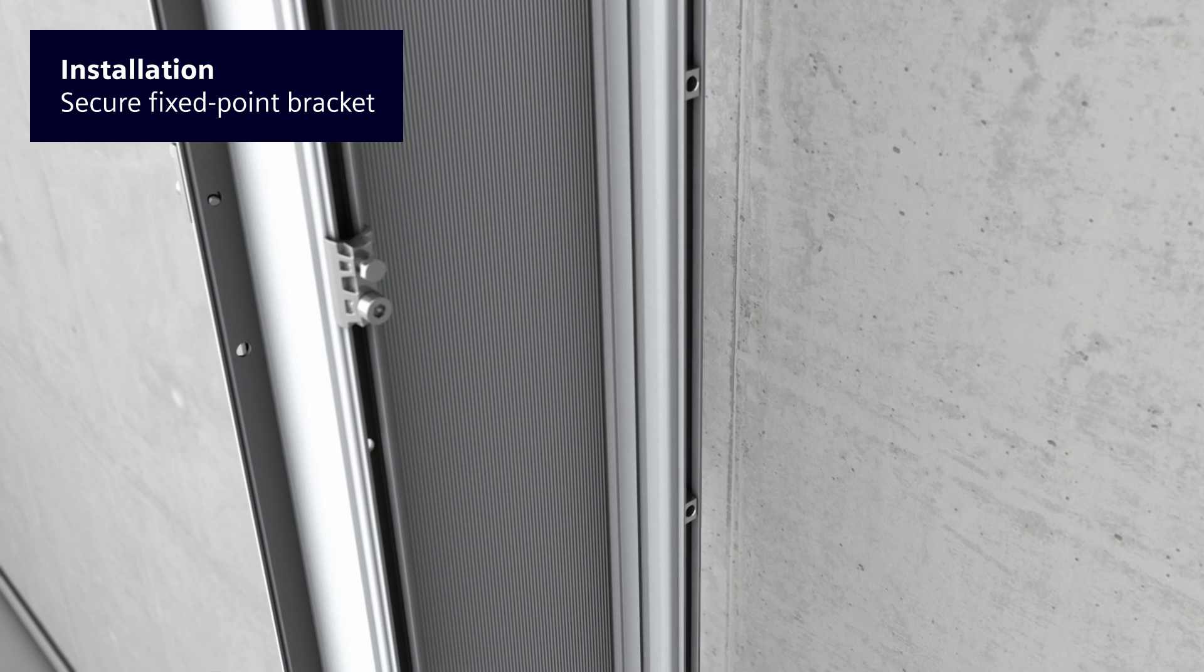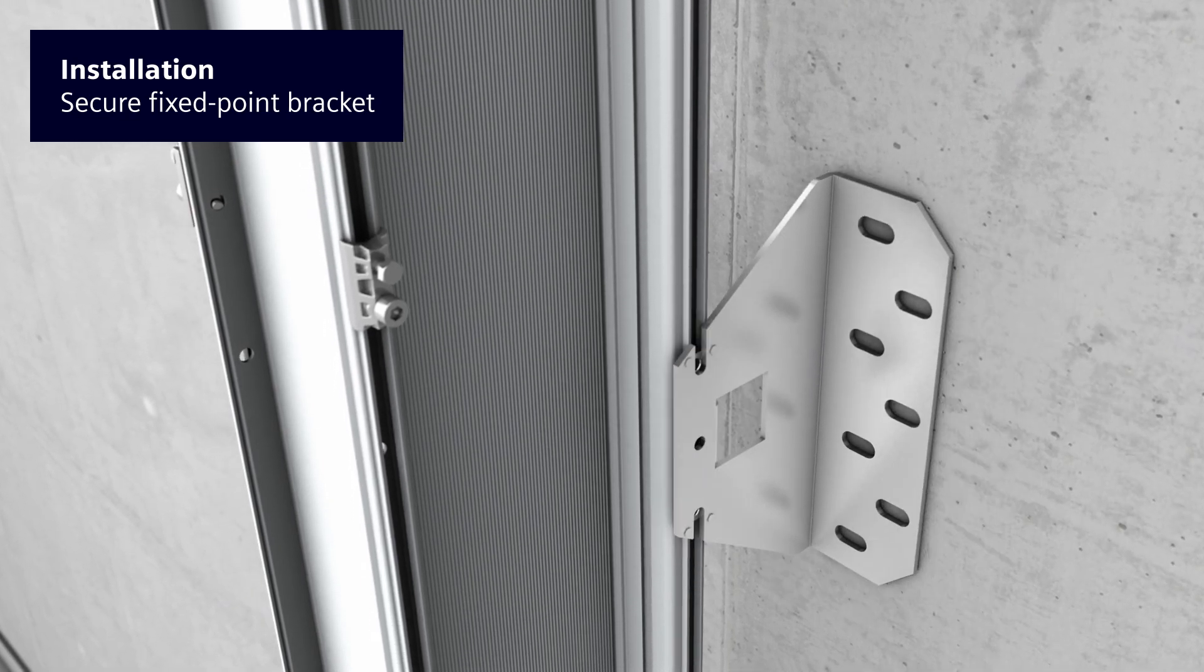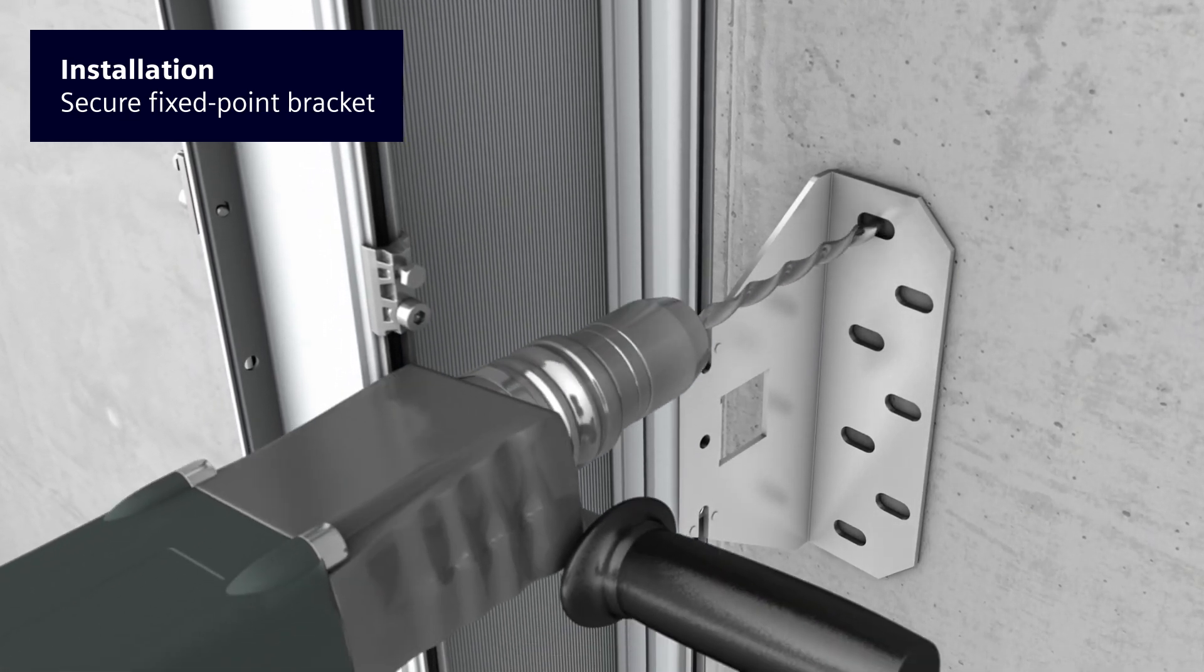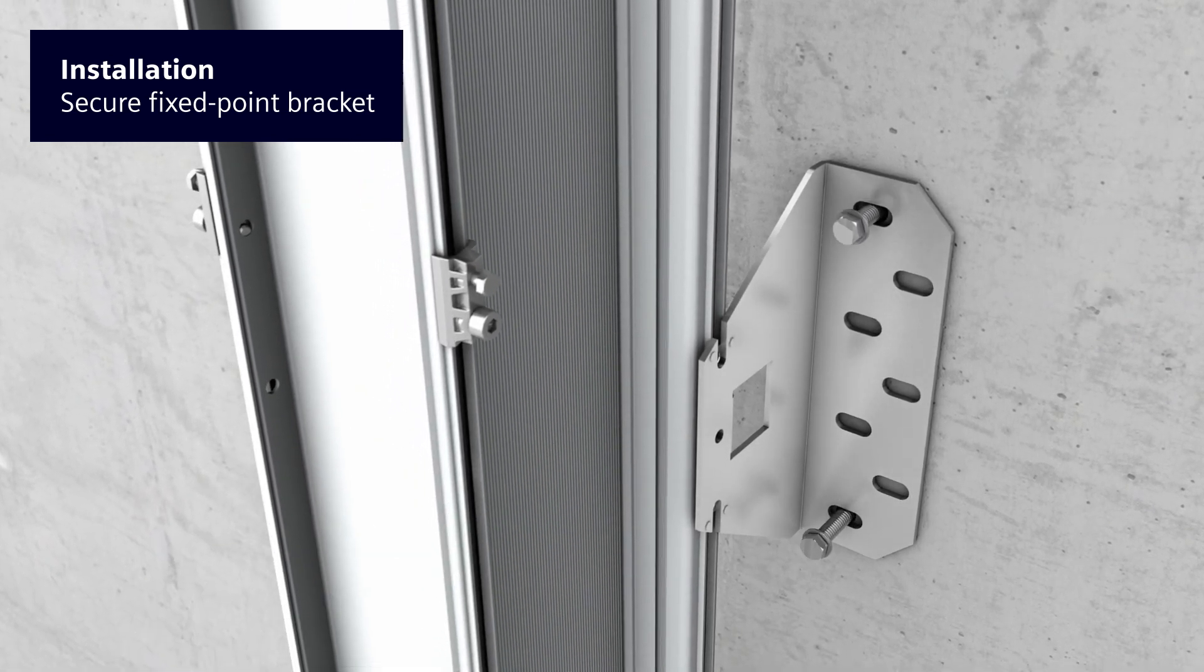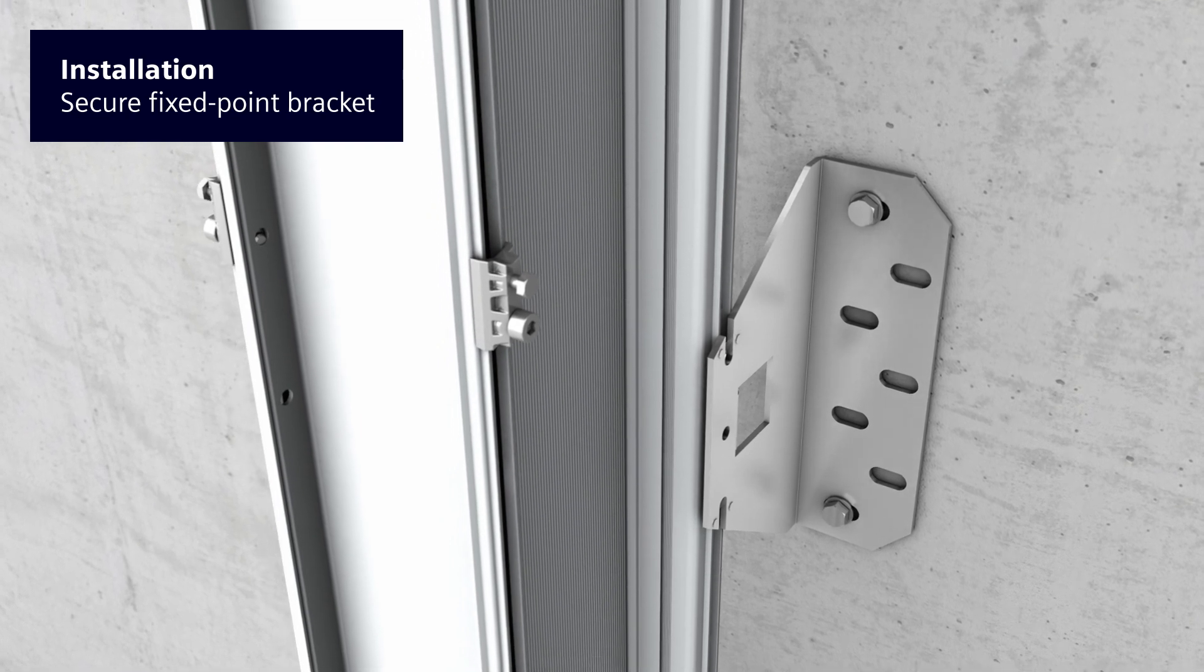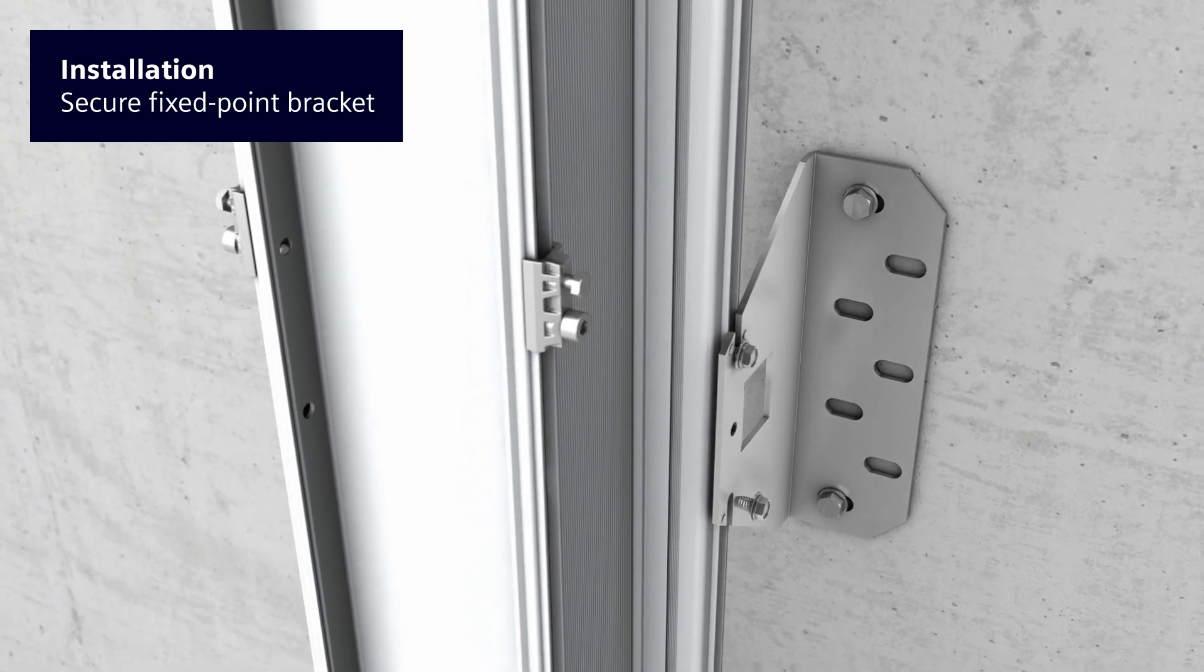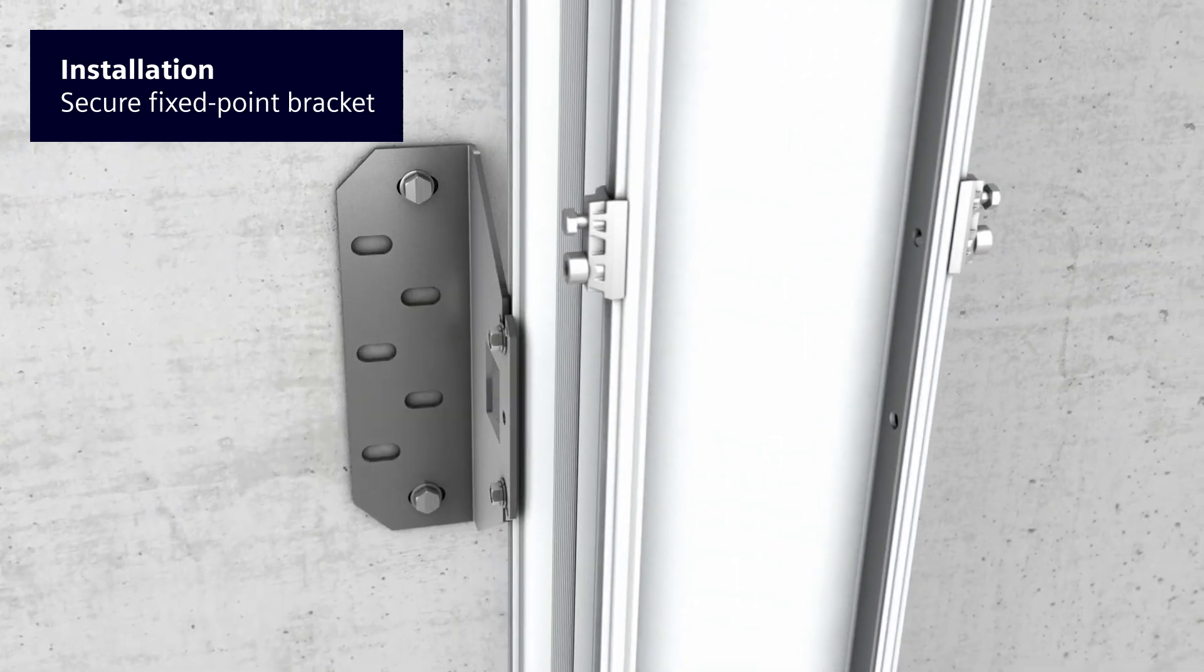The fixed point angle is an important retaining element in vertical installations. The fixed point angle serves as a template for drilling the fixing holes in the wall. Once the holes have been drilled, the fixed point angle is then screwed to the wall and to the trunking unit.